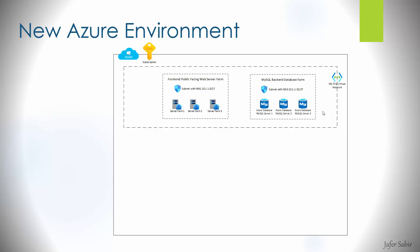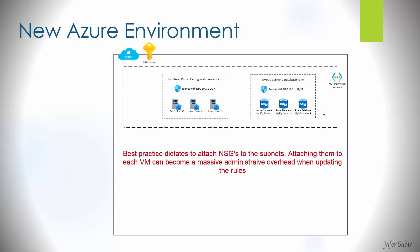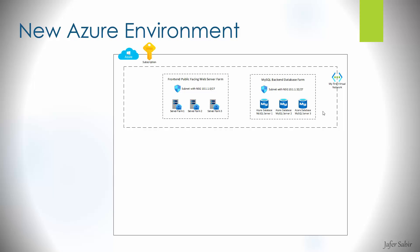NSG rules can contain multiple inbound and outbound security rules that filter traffic by source and destination IP addresses, ports, and protocols. A firewall appliance might be overkill here, so we go with NSGs. Best practice and Microsoft Azure recommendation is to apply NSGs at the subnet level to keep management overhead to a minimum, rather than applying an NSG to each NIC on each virtual machine, which would be a massive burden to keep updated every time a change is needed.